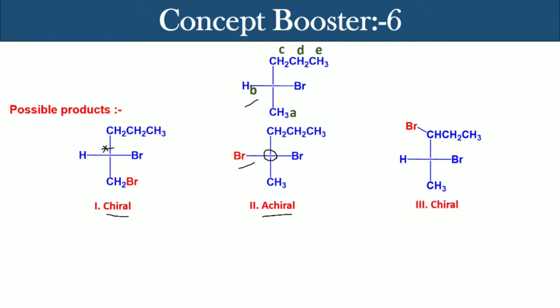It is chiral because of having two chiral centers. If hydrogen d is replaced by bromine atom, then product four will be formed, and it is also chiral because of two chiral centers. And the last one, if hydrogen e is replaced by bromine atom, then product five will be formed.